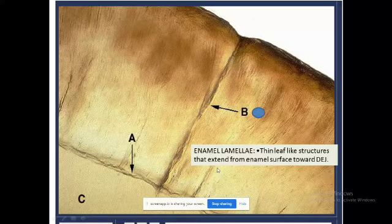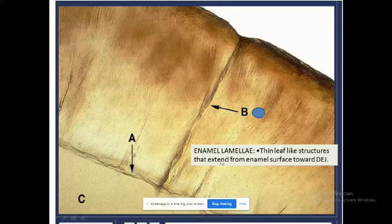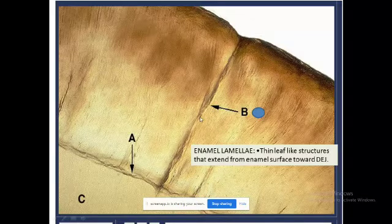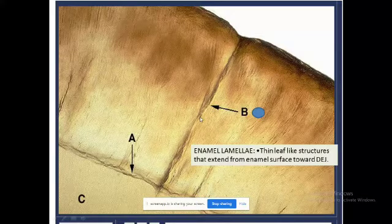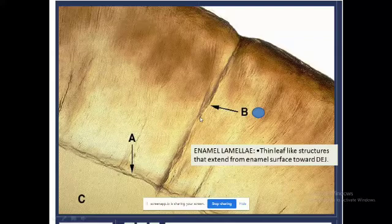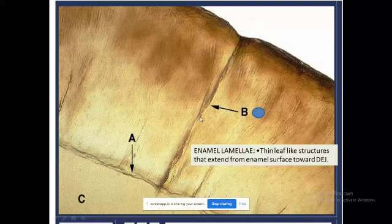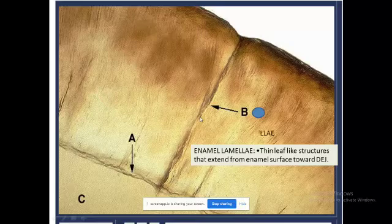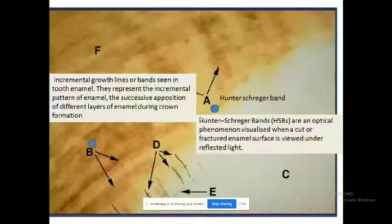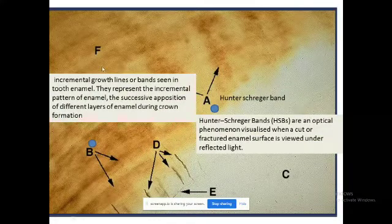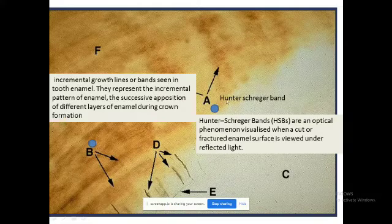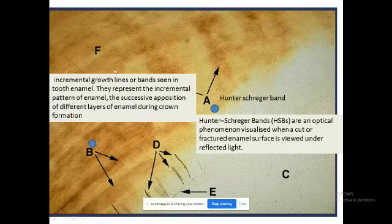These hypermineralized leaf-like structures, enamel lamellae, need to be differentiated from enamel cracks which generally disappear on ground section or decalcified sections. These enamel lamellae are the source of initiation of caries as a clinical aspect to remember in future practice.